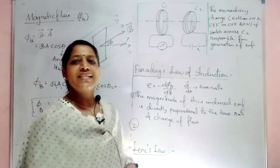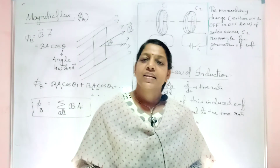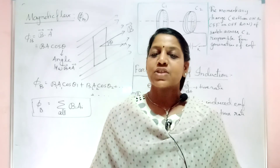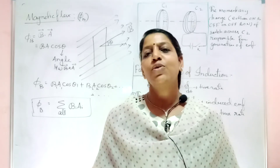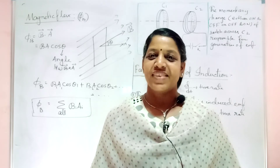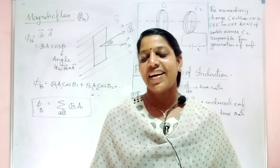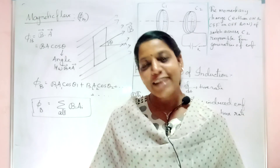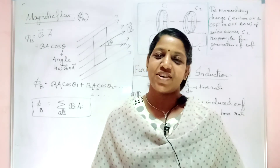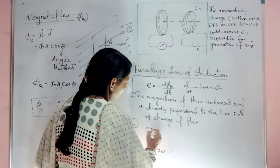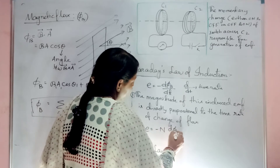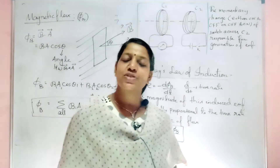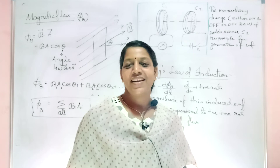Faraday also gave a second statement. A coil has a number of turns, and if you increase the number of turns, the induced EMF is more; if you reduce the number of turns, the induced EMF is also reduced. From this they concluded that induced EMF is also directly proportional to the number of turns. So the formula becomes E = −N·dΦ_B/dt. The induced EMF is directly proportional to the number of turns of the coil.